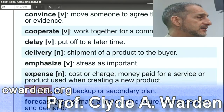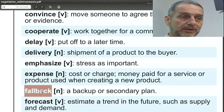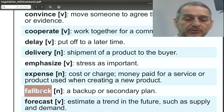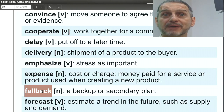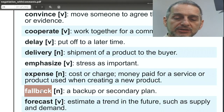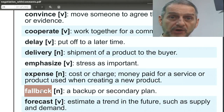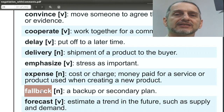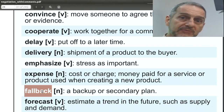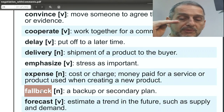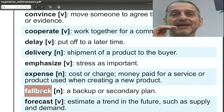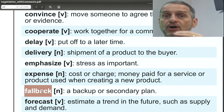'Fallback' is a position or plan you use when your main plan doesn't work out — it's your backup plan. In negotiation, you can have many fallbacks around prices, shipping, quality, or different deal packages. When planning with your team, you need to think: What's our first position, what we want most? But if that doesn't work, what do we want next? And if that doesn't work, what's next? By thinking this way, you have a fallback — maybe two fallbacks.